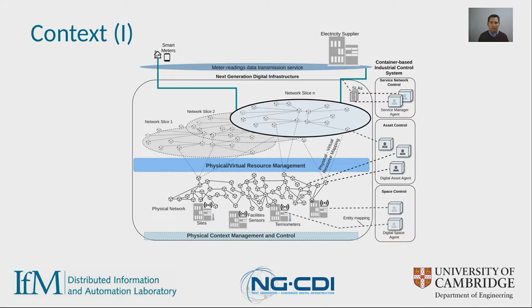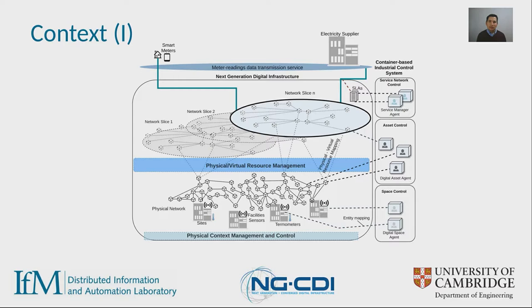Trying to visualize what the digital infrastructure is: in this figure, at the bottom we observe a number of physical network elements. On top of them we have virtual functions that are deployed and that ultimately enable the provision of services to customers. These physical devices are deployed in controlled or uncontrolled spaces, and they enable us to collect data about performance, condition, and environment. The idea is that we should be able to use that data to make different decisions about the management or control of the infrastructure.